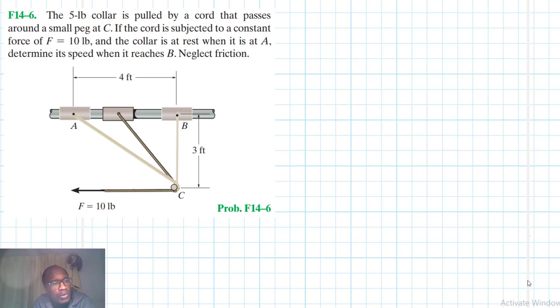Hello, I welcome you all. The problem reads: the 5-pound collar is pulled by a cord that passes around a small peg at C. If the cord is subjected to a constant force of 10 pounds, and the collar is at rest when it is at A, determine its speed when it reaches point B.